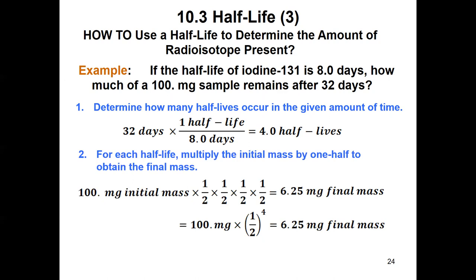Next, for each half-life, multiply the initial amount by one-half to obtain the final mass — basically divide the mass by half as many times as you have half-lives. The 100 milligram sample will be divided by half one time, two times, three times, and four times because we had four half-lives. So we multiply 100 milligrams by (1/2)⁴. Two to the power of four is 16, so it's 100 milligrams multiplied by 1/16, which equals 6.25 milligrams. That's the final mass.